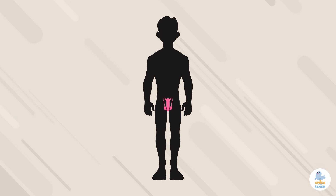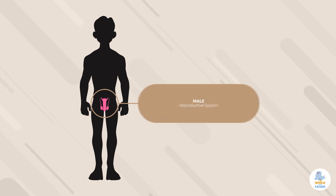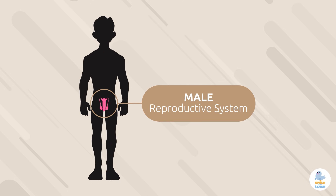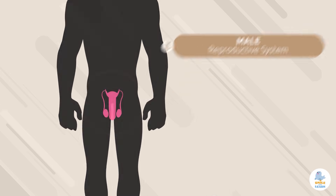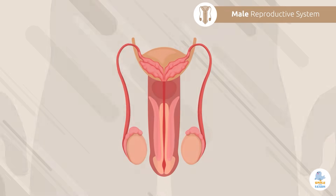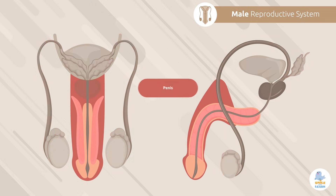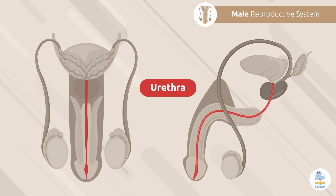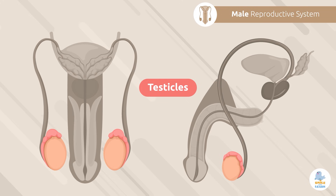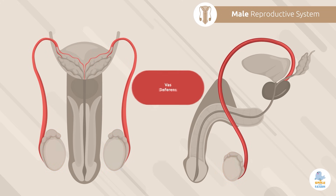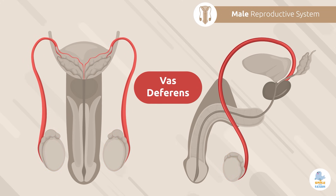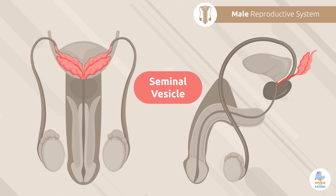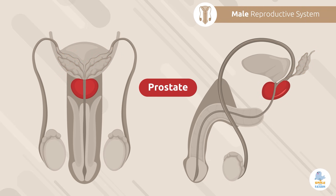Now we'll move on to learn about the male reproductive system. The main components of the male reproductive system are the penis, urethra, testicles, vas deferens, seminal vesicle, and the prostate.